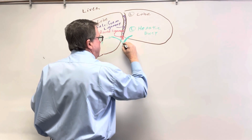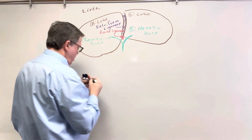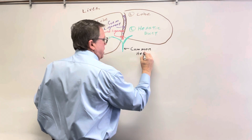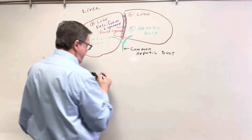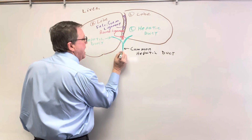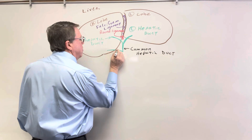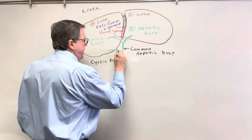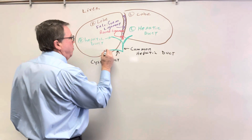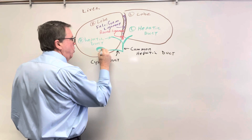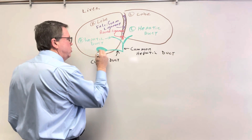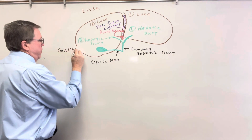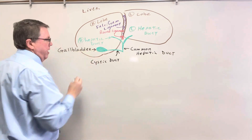So my right and left hepatic ducts are going to come together, and they are going to form what we call the common hepatic duct. And then coming off the common hepatic duct, I am going to have another duct that's going to basically go back up this way, and we are going to call this the cystic duct. And the cystic duct is going to be attached to the gallbladder. The gallbladder is responsible for storing bile. So this is going to be my gallbladder.